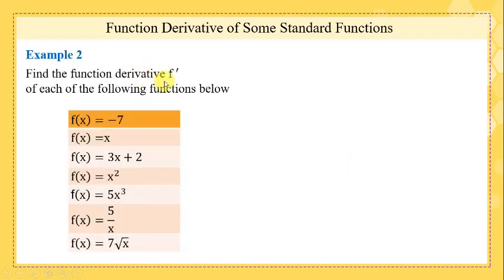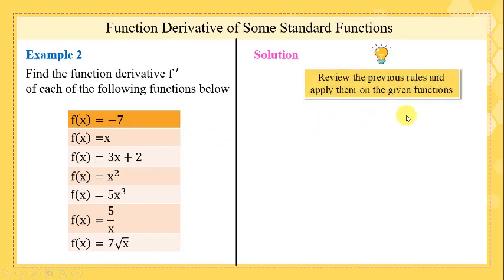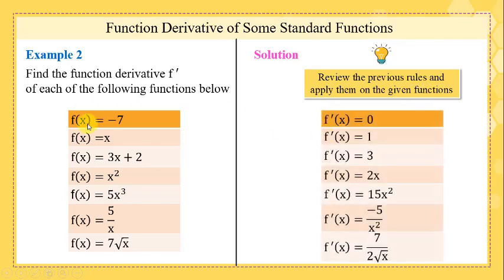Review the previous rules and apply them. The derivative of -7 is 0. The derivative of x is 1. The derivative of 3x + 2 is 3. The derivative of x² is 2x. The derivative of 5x³ is 15x². The derivative of 5/x is -5/x². The derivative of 7√x is 7/(2√x). Simply apply the previous rules and review them.